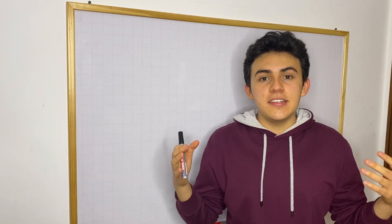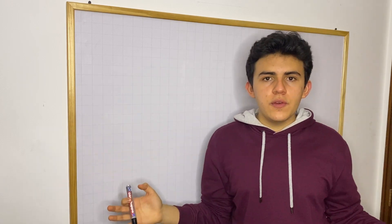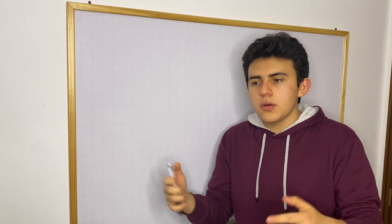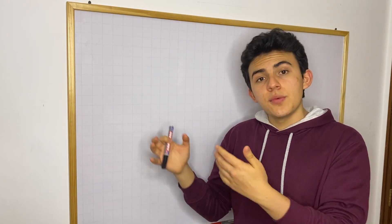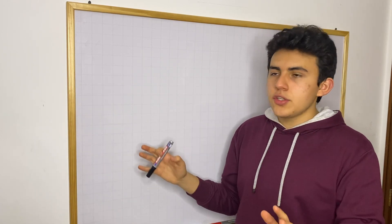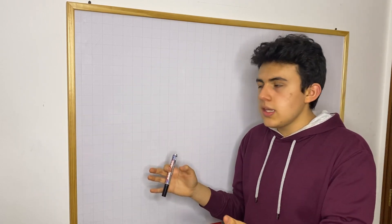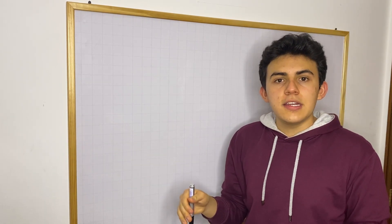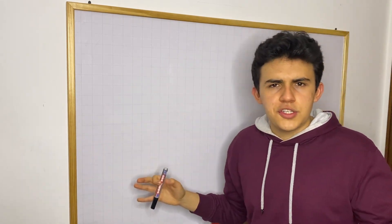Hi everyone, today I want to discuss the second fundamental theorem of calculus and the chain rule. In previous videos I've gone over how you can use the FTC2 to compute derivatives of functions that are written in terms of integrals. Today I want to show you what you can do when the upper bound of the integral is a function.